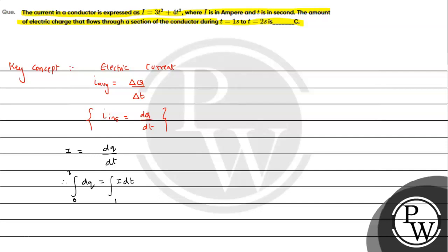And it will be from 1 second to 2 seconds. So here we substitute the value in the current equation. In the current equation we have given it as 3t² plus 4t³ into dt.